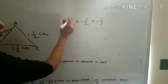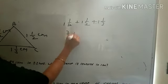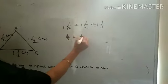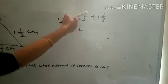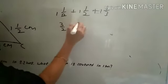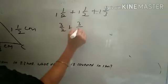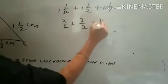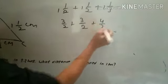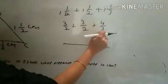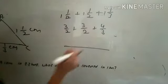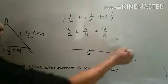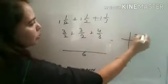Converting: 1 and 1/2 becomes 3 by 2, and again 1 and 1/2 becomes 3 by 2, and 1 and 1/3 becomes 4 by 3. Now we take the LCM of 2, 2, and 3. The LCM of 2, 2, and 3 will be 6, and we proceed with the addition.